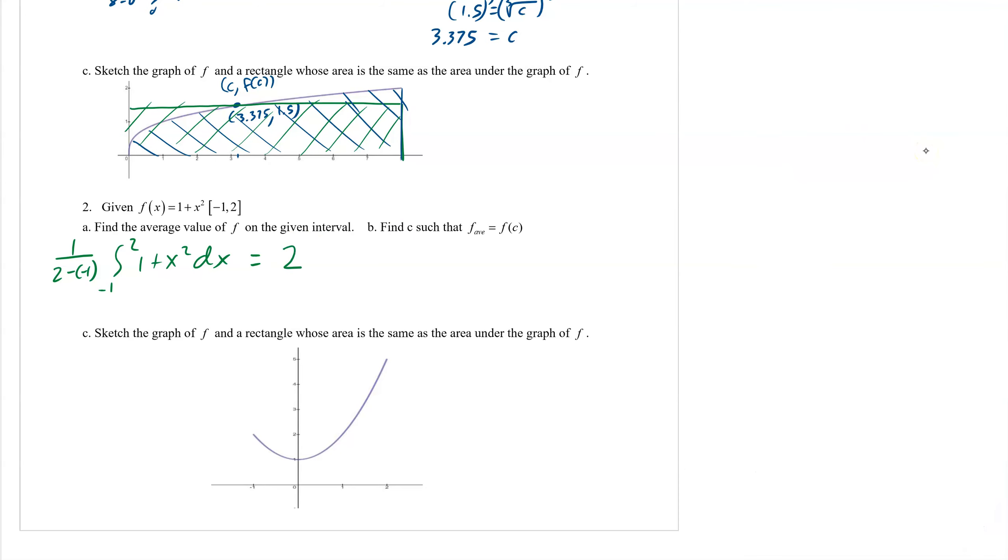If we were to take and add up all those values, divide it by 3, we would get 2. We want to make sure that we find some c value, because there has to be 1, because 1 plus x squared is a polynomial. It is continuous on that interval.